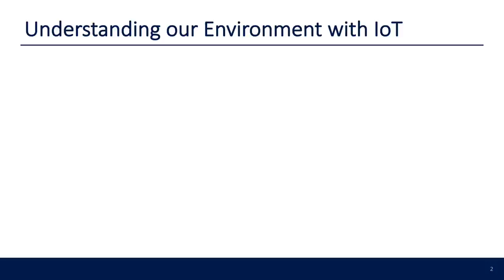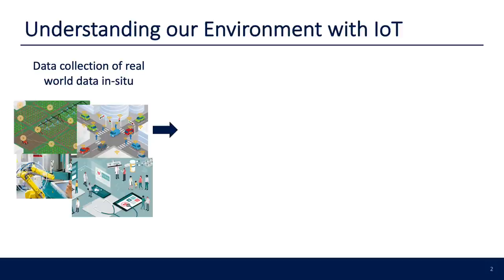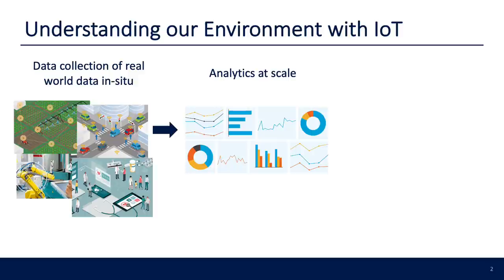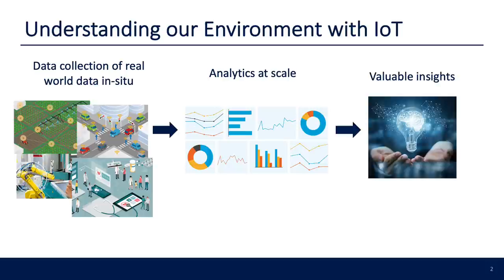This facet of the Internet of Things can really be broken down into three components. The first is the data collection step, which involves collection of real-world data at the source. After data collection, we would like to perform analytics on the data at scale. And finally, we hope that these analytics would lead us to useful insights.